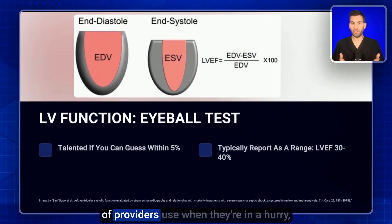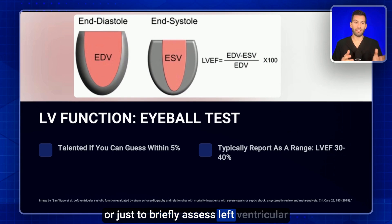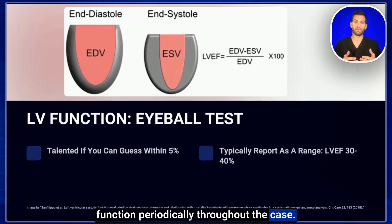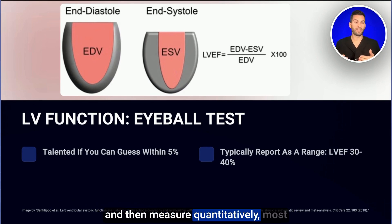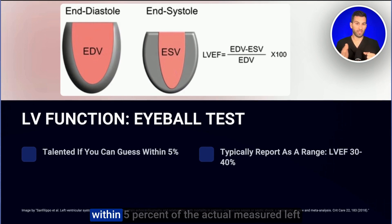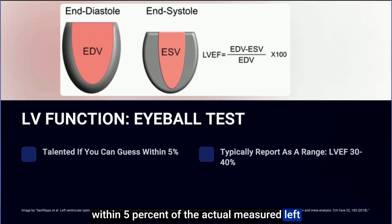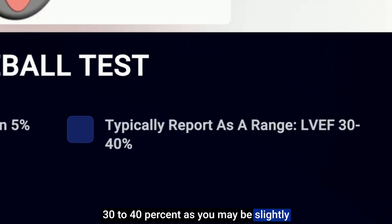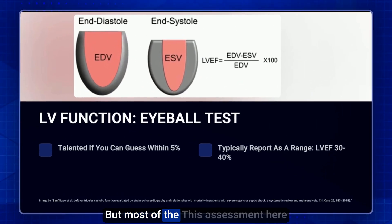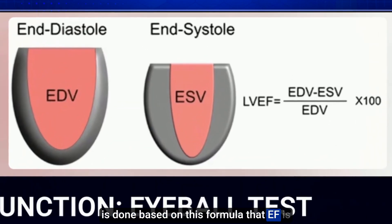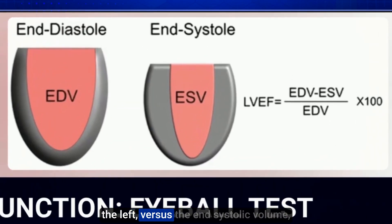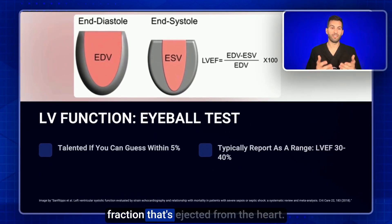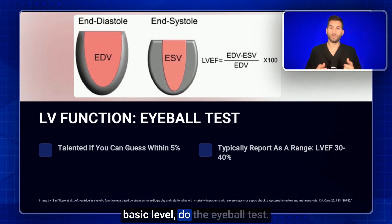The eyeball test is something many providers use when in a hurry or to briefly assess LV function periodically. If you test yourself and measure quantitatively, most people who are good at this get within 5% of the actual measured left ventricular ejection fraction. Because of this range of error, we frequently report a range — for example, LVEF 30 to 40%. The assessment is based on the formula: EF equals end diastolic volume minus end systolic volume, divided by end diastolic volume — essentially the fraction ejected from the heart.